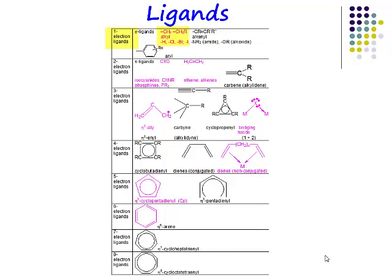An alkyl ligand is a one electron donor. A chloro ligand is a one electron donor. Examples of two electron donors are anything that bonds through a dative bond.